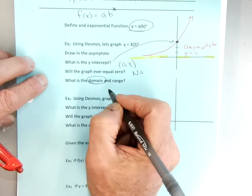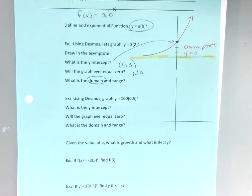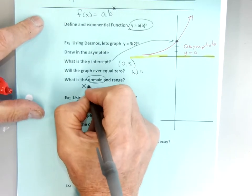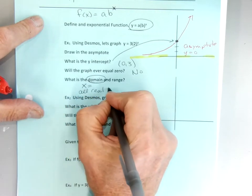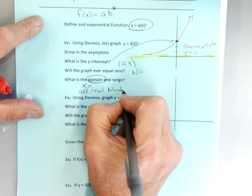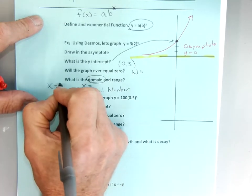Domain is all x values. Two ways to interpret the domain: I can plug in anything — you can put a hundred in, a thousand in. How wide is this graph? The x values go to infinity, so I would say all real numbers. My domain is x equals all real numbers.